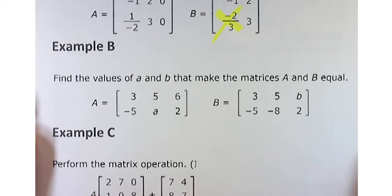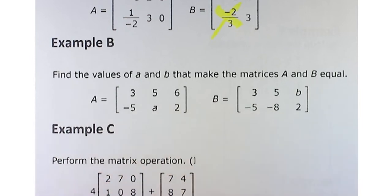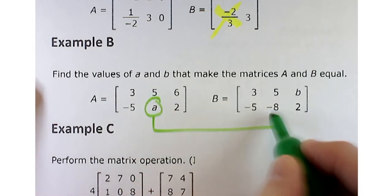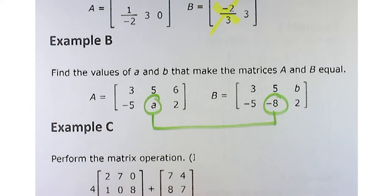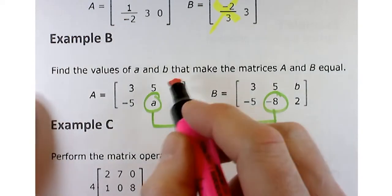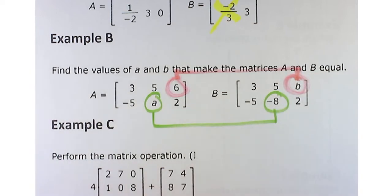Following up on that is this one: find the values of A and B that make the matrices equal. Everything looks good except here I've got an A, and over here I've got a negative 8. So A has to equal negative 8, and likewise B has to equal 6. If you put those values in for A and B, these matrices would be identical.